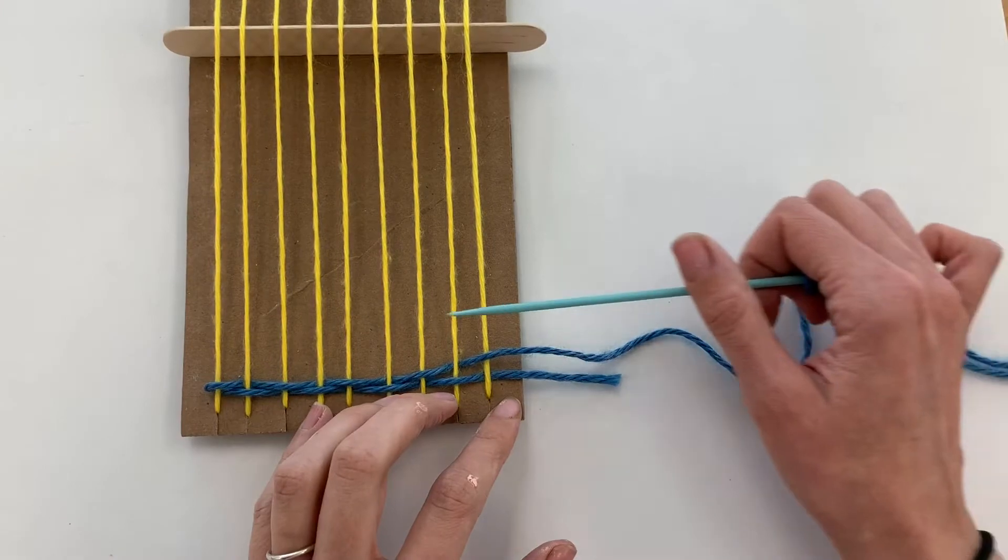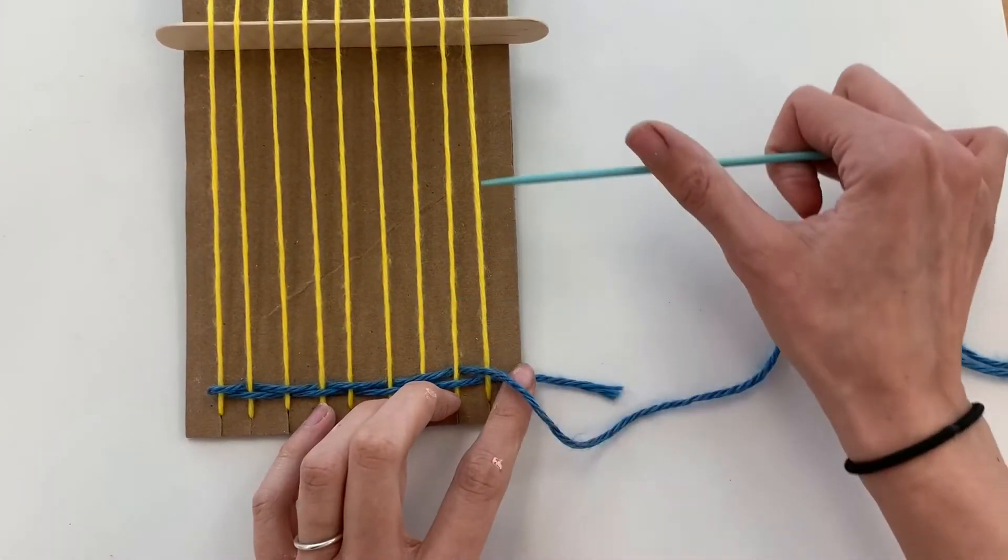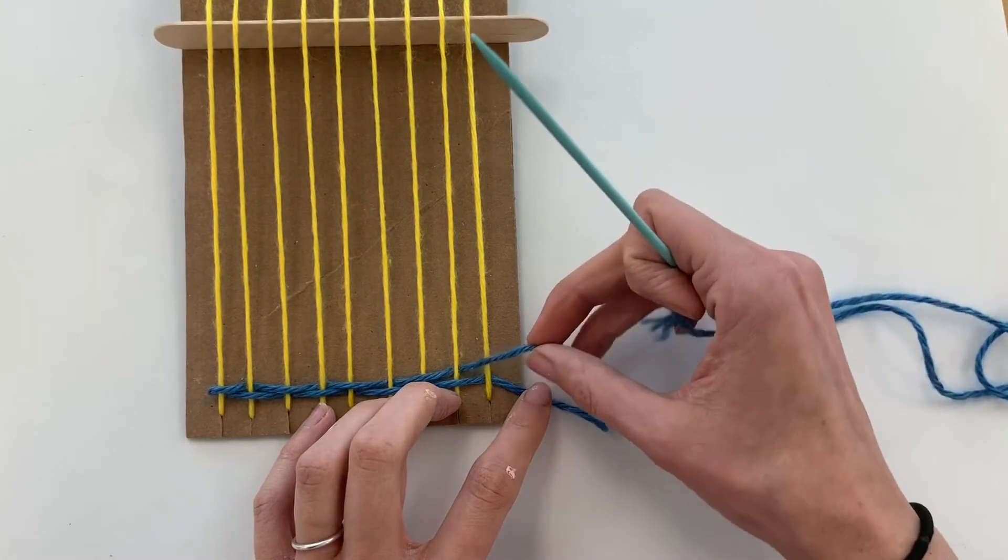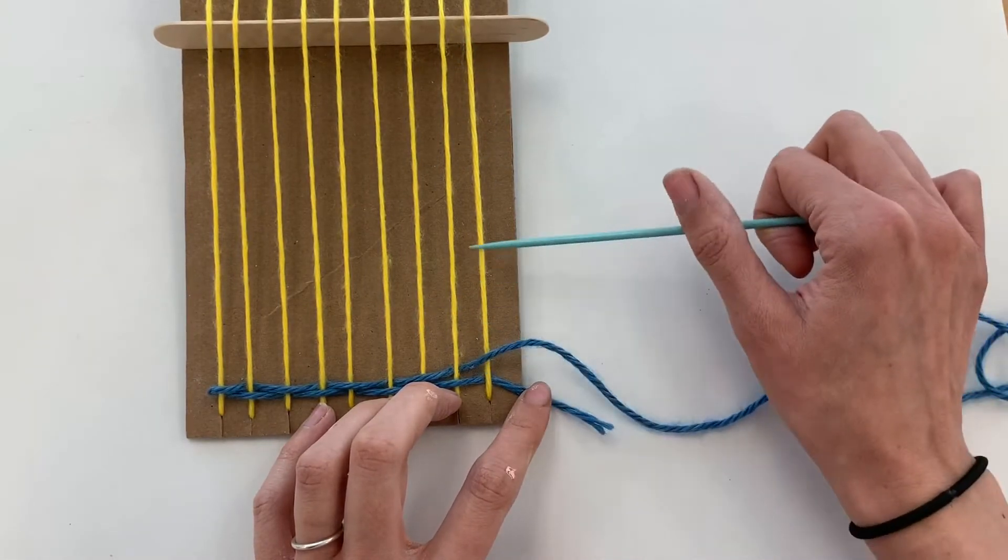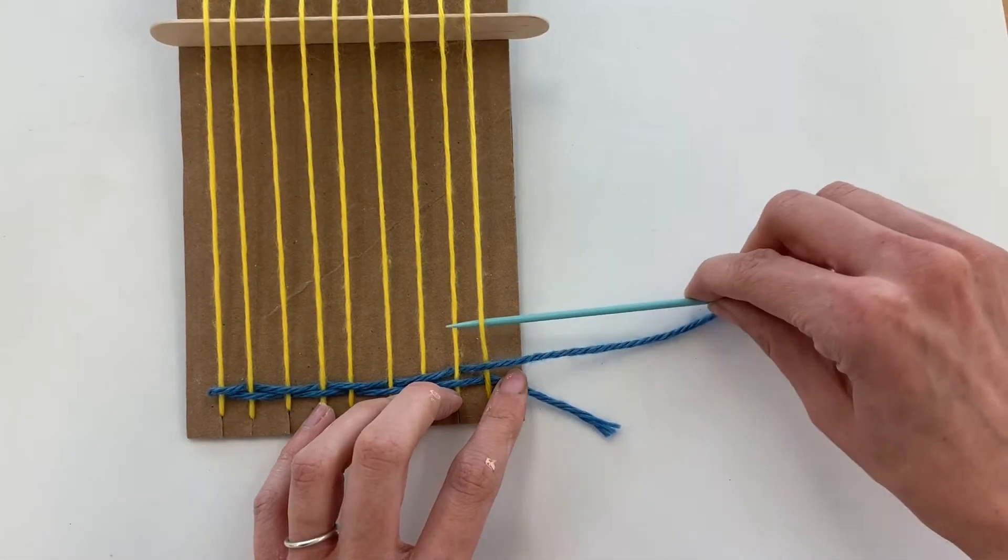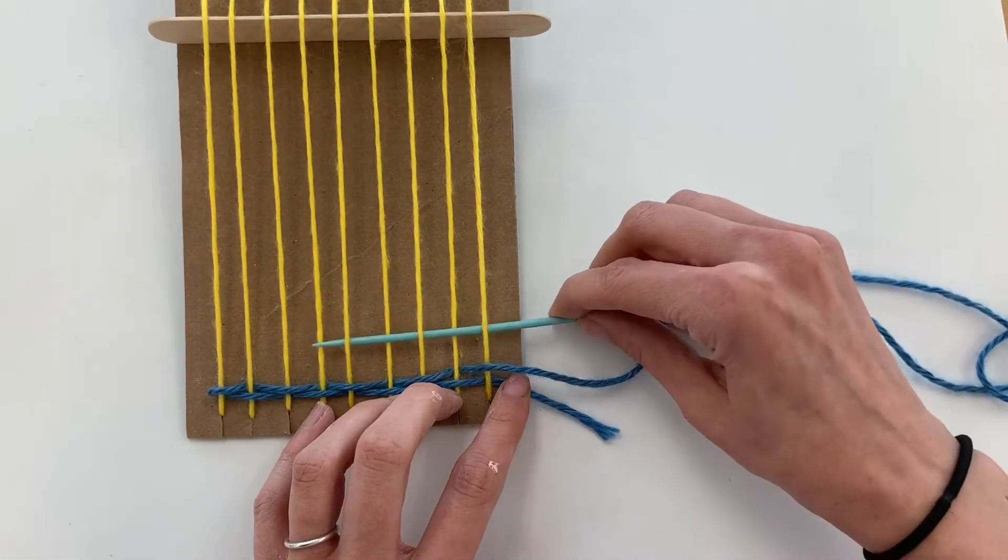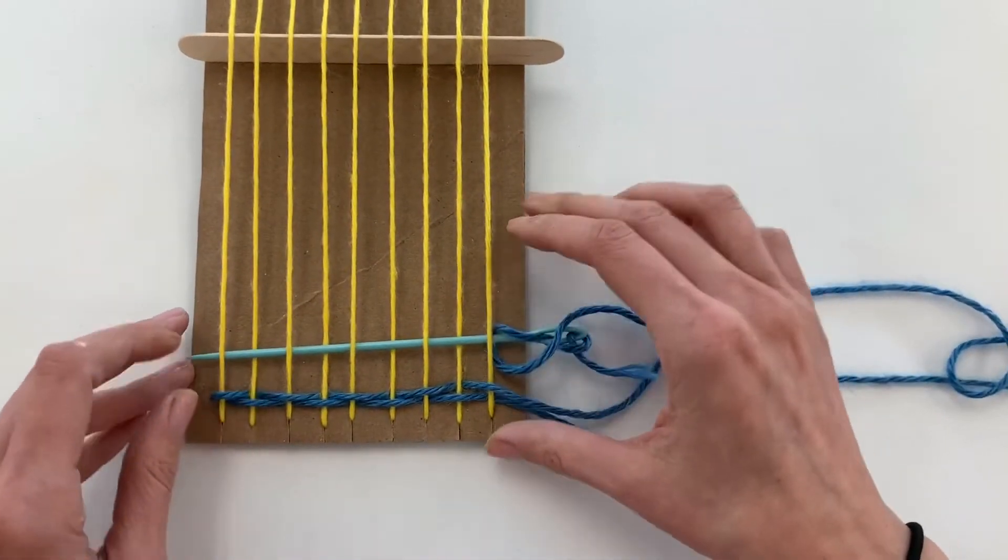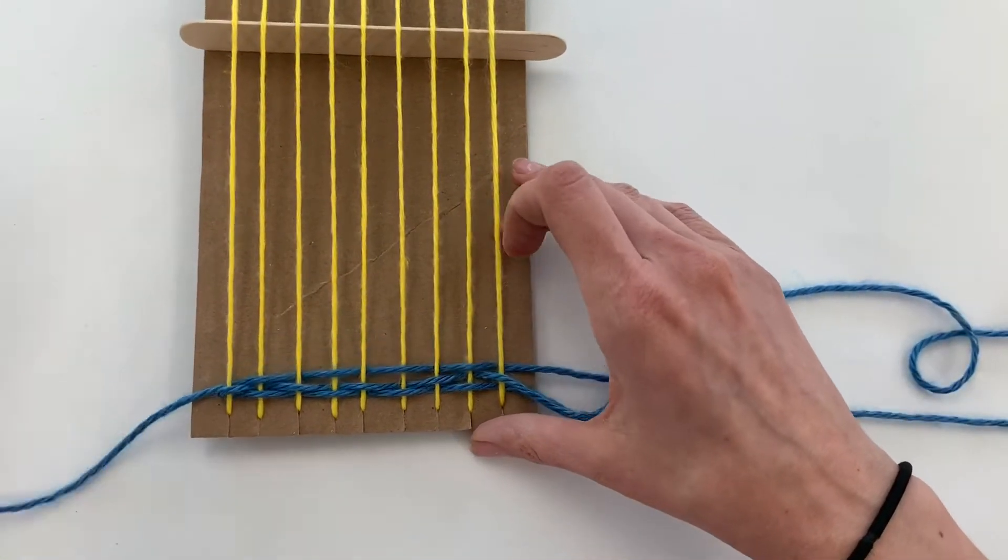Then when I want to come back this way, I again have to look at this last warp string. As I'm looking at it, I see that my blue string has gone over the yellow warp string. So when I come back, this time I've got to go under the yellow warp string. And then again, continue that pattern all the way across, being very, very careful not to skip two at a time.